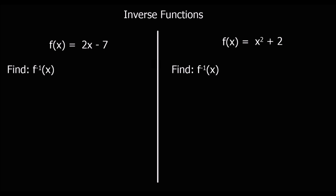Here are two for you to try — see if you can find the inverse functions of both of these. For the first one, we write y equals 2x minus 7, then the inverse function is where you switch x and y around, so x equals 2y minus 7.